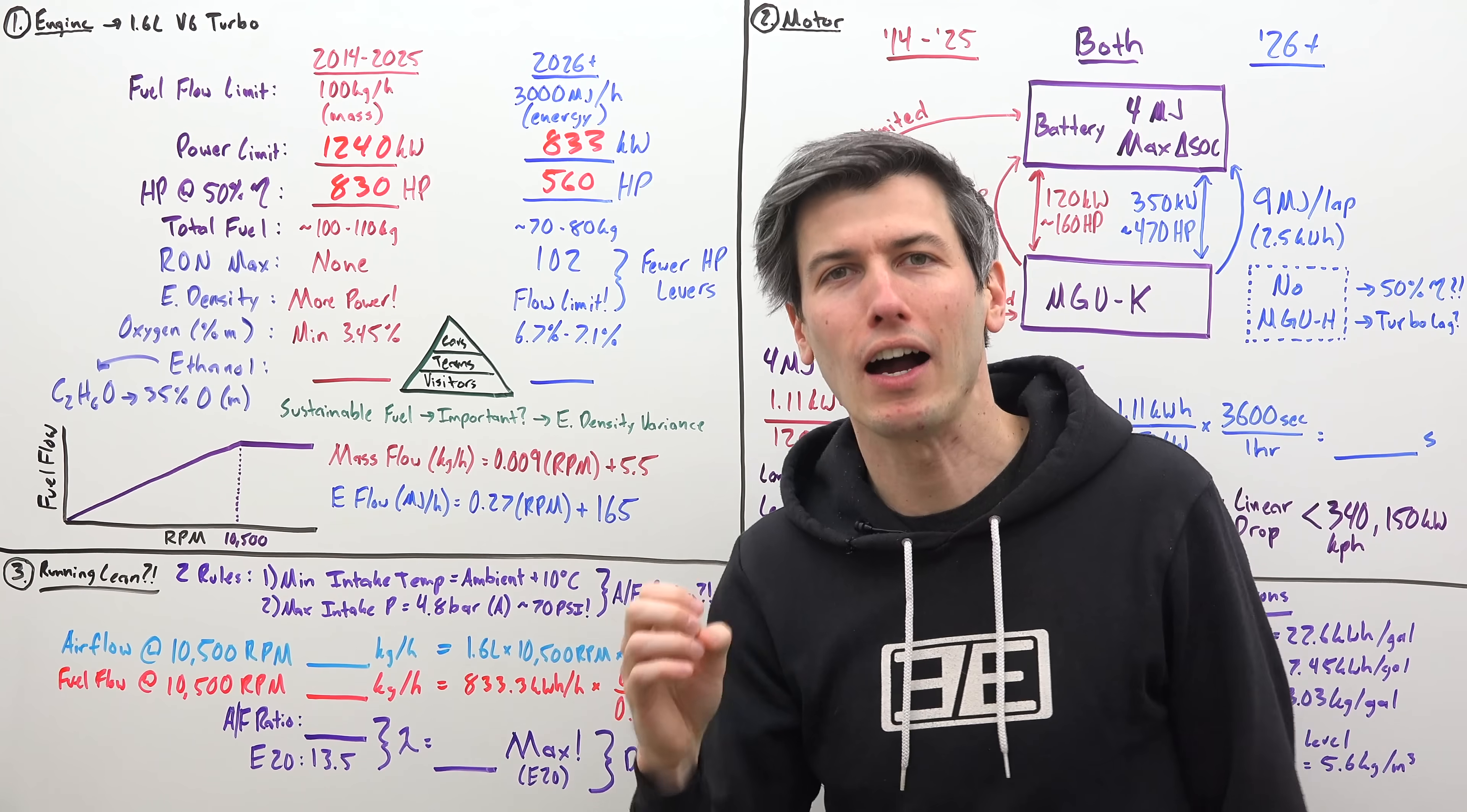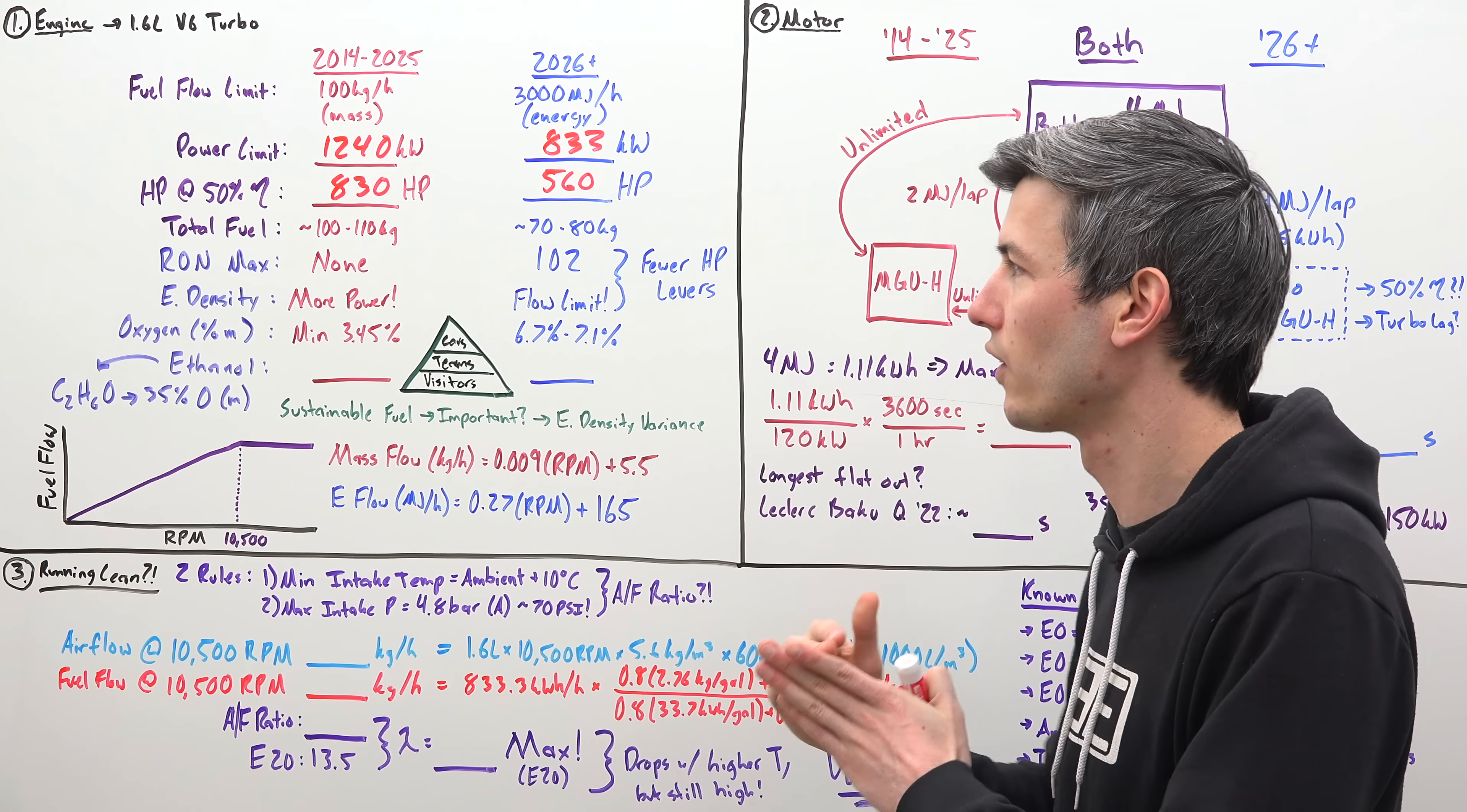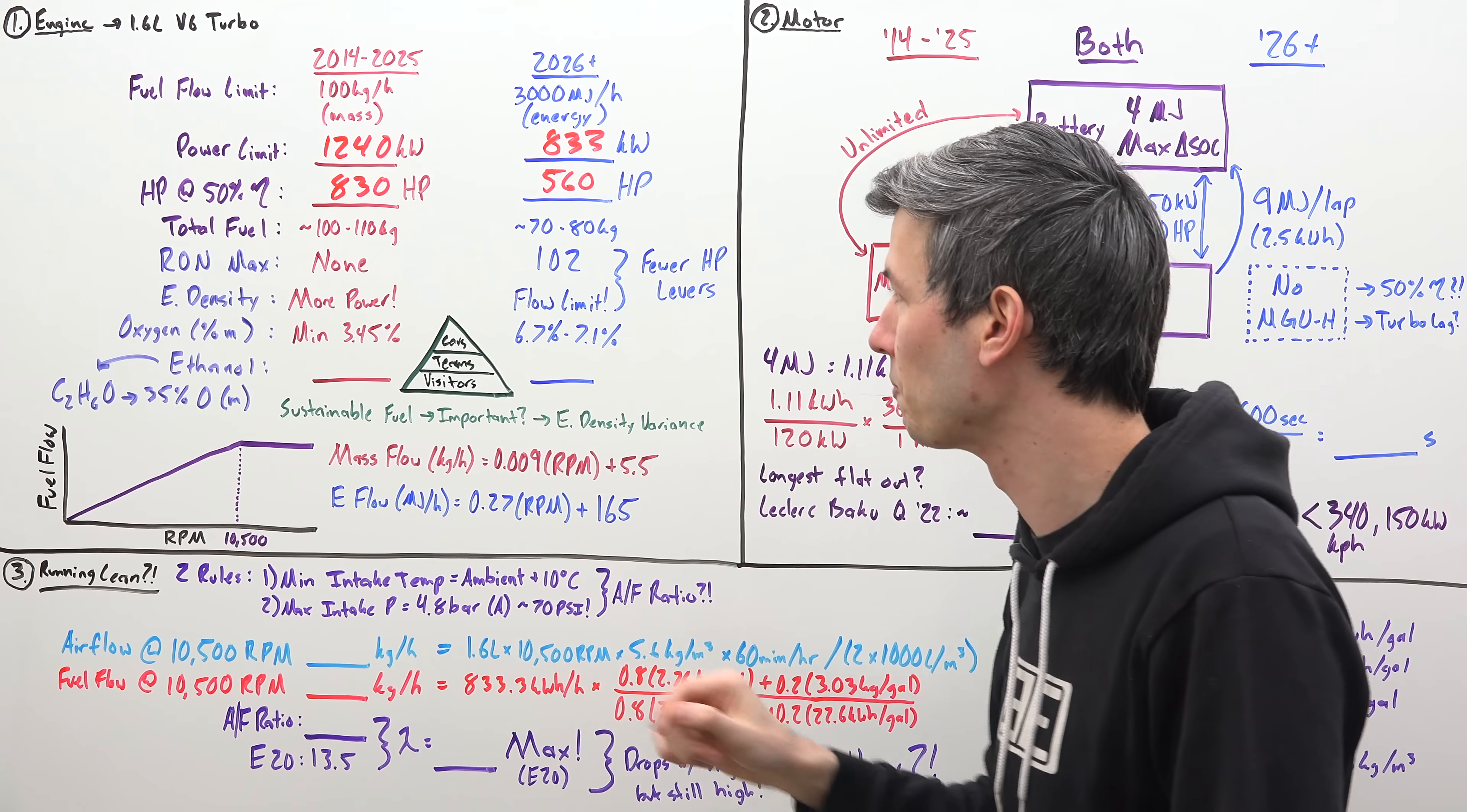Currently there is no octane number maximum for the fuel. So in theory, your fuel flow is limited to 100 kilograms per hour, but if you have a higher octane fuel, then you could make more power using that same fuel flow. Additionally, there isn't anything exactly specific saying your energy density must be this. So if you have a higher energy density fuel, that means you're injecting more energy with your fuel flow limit and thus can make more power. So both of these are levers that you can play with. Fuel is very tightly controlled, so it's not a huge lever, but it is a lever that you can lean on a little bit to get a little bit more extra performance.